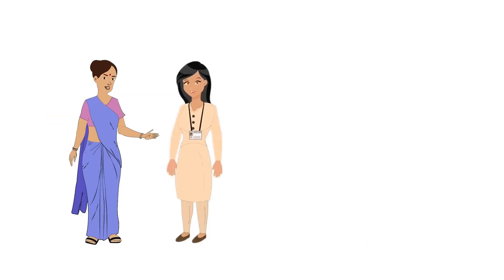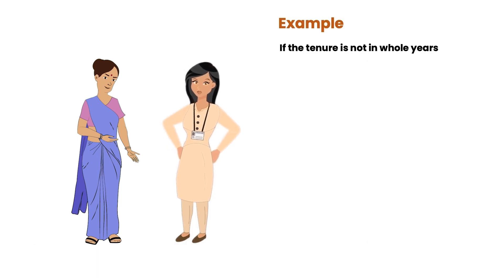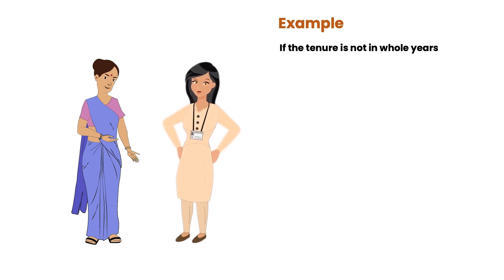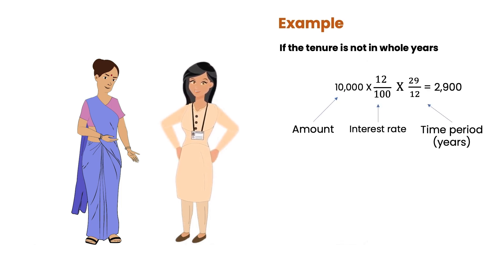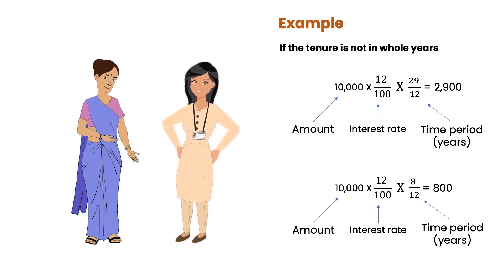Madam, this was not difficult. But what happens if the tenure is not in whole years? For example, it could be 2 years 5 months or 8 months, etc. If the period is not in whole years, you still have to write the period in years. This can be done by simply dividing the loan tenure written in months by 12. For example, 2 years 5 months is equal to 29 months, and in years it is 29 divided by 12. Similarly, 8 months in years can be written as 8 by 12. You can use these fractions in the formula.